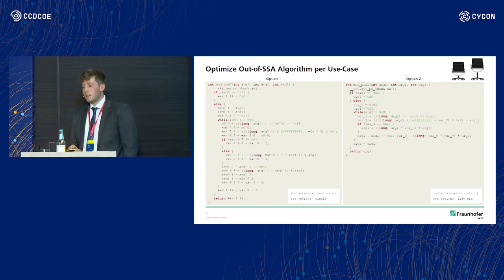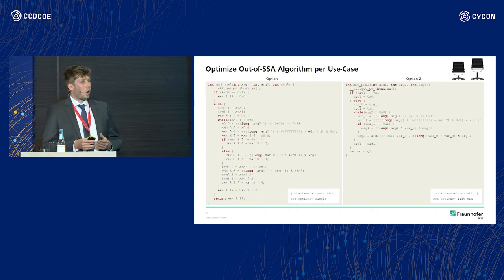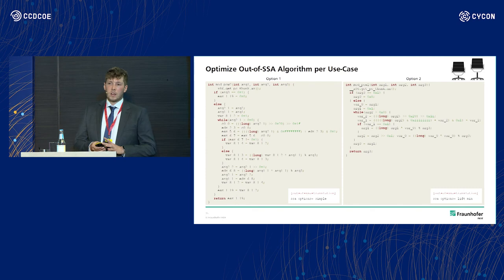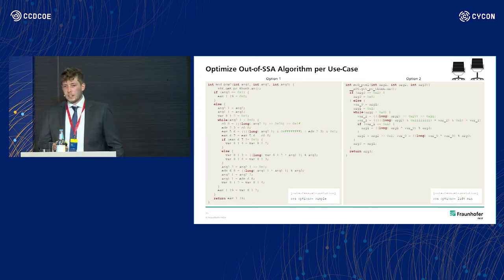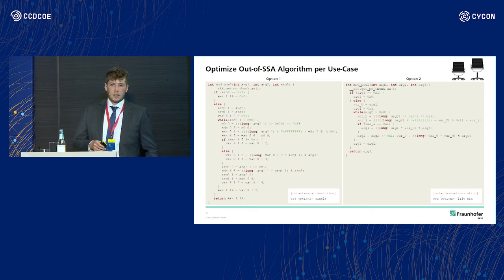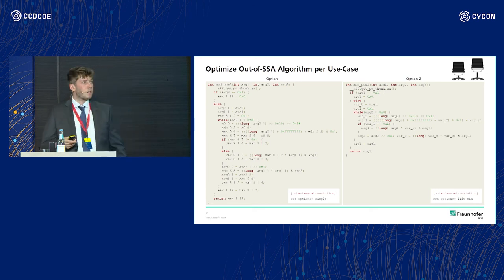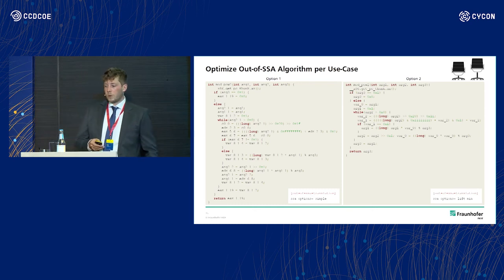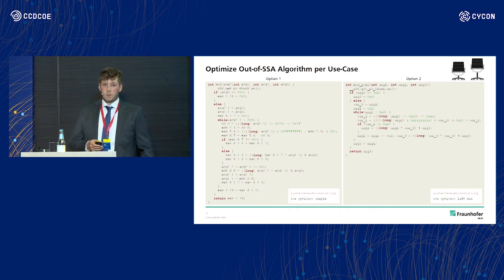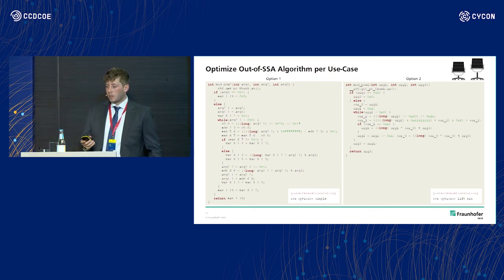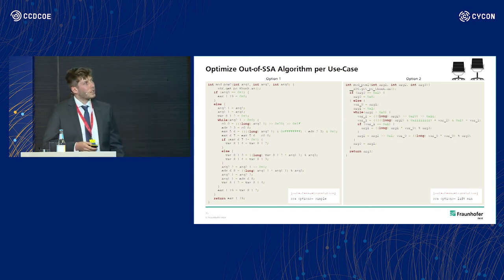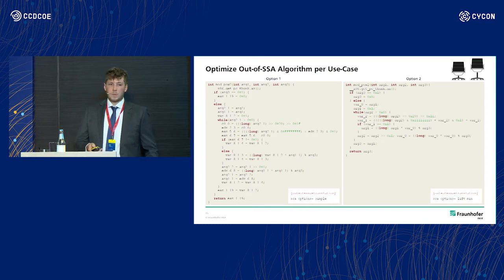The second example is that we should also be able to optimize depending on use case — depending on whether we have an automated or a manual approach, we want a different kind of output. This is actually the same sample decompiled with identical configurations except for one option: the out-of-SSA algorithm used. Changing this single option produces a drastically different output. On the left we have a quite low-level representation using a very simple out-of-SSA algorithm, which may be beneficial for automated approaches that don't profit from too many abstraction layers. Option two is much more high-level with fewer lines of code for the analyst — so again, we have to optimize depending on use case.